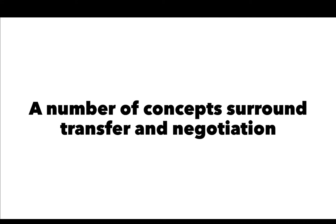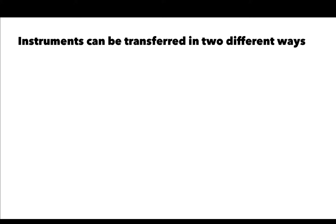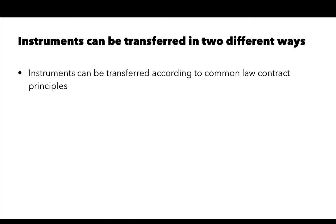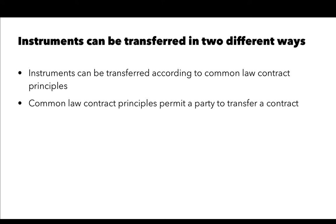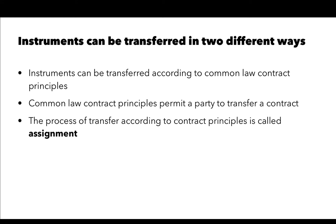There are two different ways for a negotiable instrument to be transferred from the holder to the acquirer. The first is a way that you should be familiar with from contract law. Common law contract principles permit a party to transfer the rights that that party has under a contract. This process of transfer according to contract principles is called assignment.